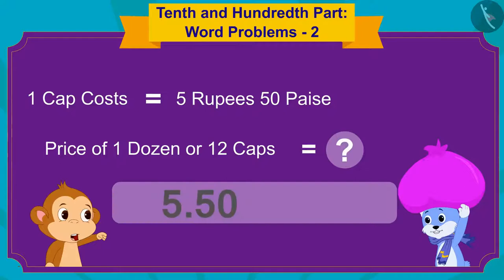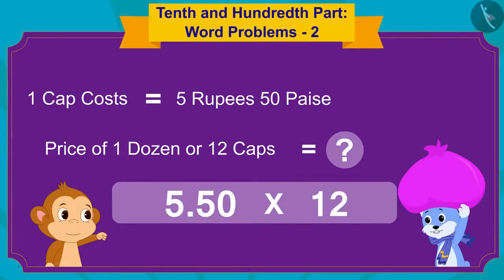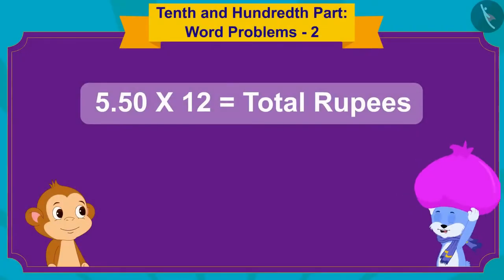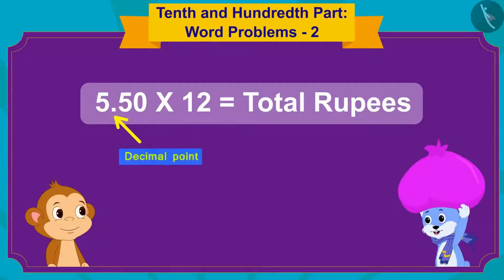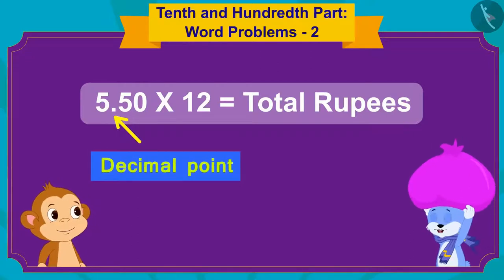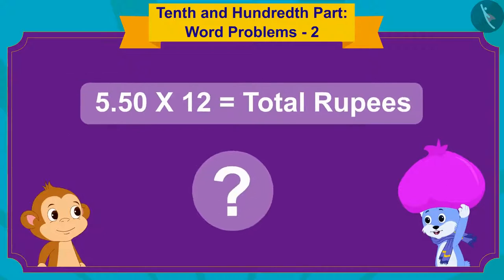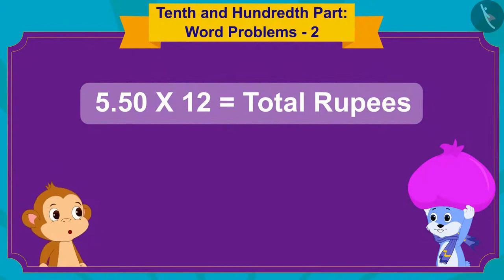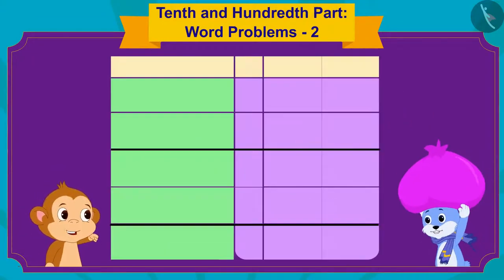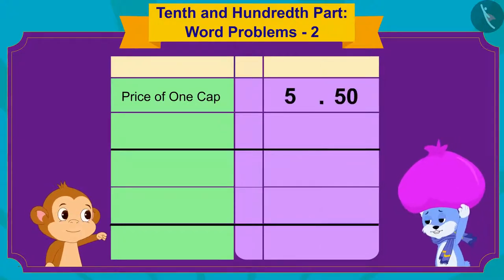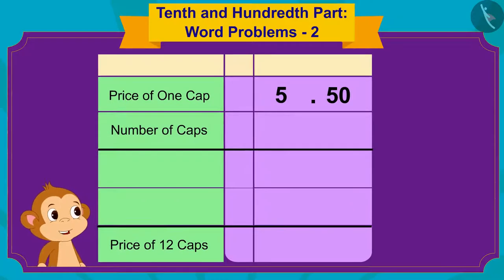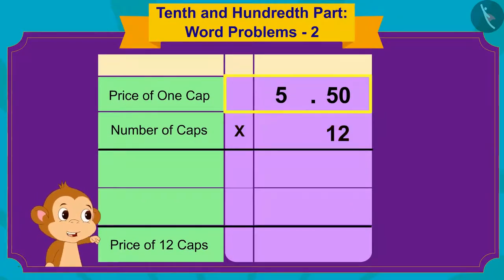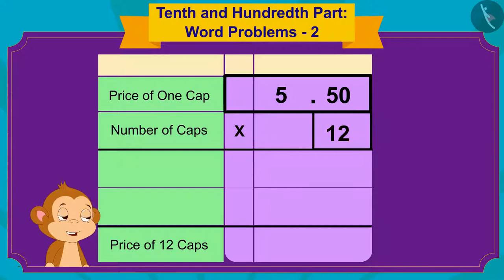To find the price of a dozen, or twelve caps, we have to multiply the price of one cap by 12. Babban told Bunny. Bunny said: I see, but there is also a decimal point in the middle, so how do I do this multiplication? Babban replied: I will teach you. Look, first we will write the price of one cap like this. Now we will multiply 550 by 12, just as we do any multiplication.